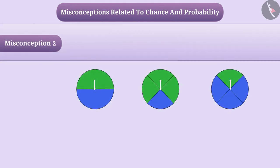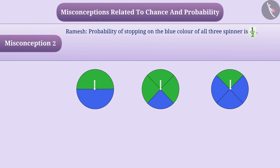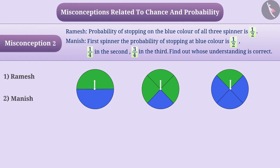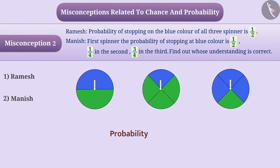Misconception 2. In the shown spinners, there are 2 colors. According to Ramesh, the probability of stopping on blue color of all 3 spinners is 1 by 2. But according to Manish, in the first spinner the probability of stopping at blue color is 1 by 2, 1 by 4 in the 2nd, and 3 by 4 in the 3rd. Find out whose understanding is correct. Like Ramesh, some children think that each spinner has 2 parts — 1 blue and 1 green — so the spinner will stop on one of these 2 parts, meaning the probability of stopping on blue is 1 by 2 for all 3 spinners. But this is a wrong understanding; option 1 is the wrong answer.